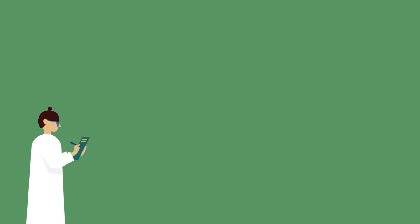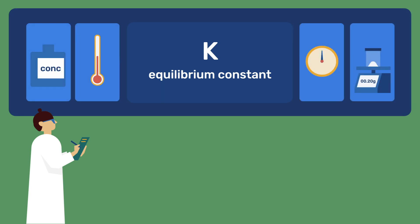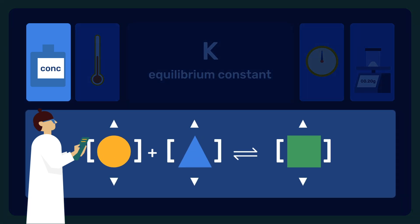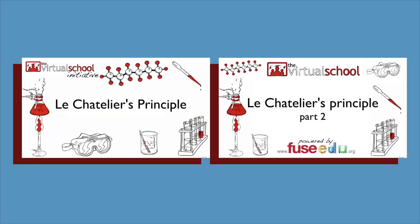Chemists make quantitative use of equilibrium constants to determine how and to what extent they can tweak reaction conditions to maximize their yields. Here, we consider the change of concentrations and relate their consequences to the qualitative principle of Le Chatelier. For more on this, please view the corresponding videos.